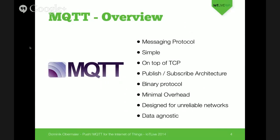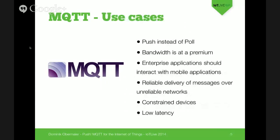If you choose the smallest MQTT package, which is a ping, it just adds two bytes of overhead to your TCP package. MQTT is designed for unreliable networks — essentially everything which has a wire involved. So if you have a mobile network, it's probably unreliable. And last but not least, MQTT is data-agnostic, so it doesn't matter if you're sending pictures, text messages, or any other content via MQTT.